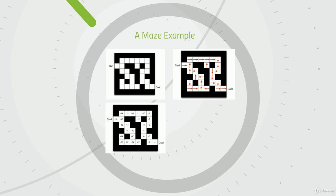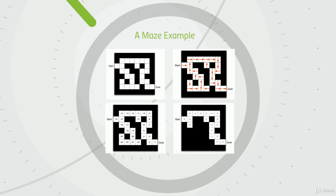Here is an example of a value function, where numbers represent the value of each state. It's very valuable to be right next to the goal, not so valuable to be at the start, and least valuable to be stuck in the bottom-left corner. We want to move toward states with higher future rewards. In the last case, the agent might have a model — a general sense of the route to take — but the model may be imperfect. In this model there are a couple of wrong moves, such as turning right at the start, but in general it still makes it to the goal. These are the three ways an agent could solve the maze: using policy, a value function, or a model, or a combination of all three.